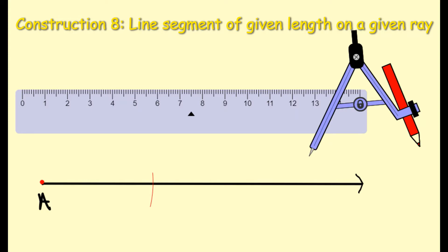Mark the distance from A to the arc and label the arc B to show that the line segment is 5 centimeters in length.